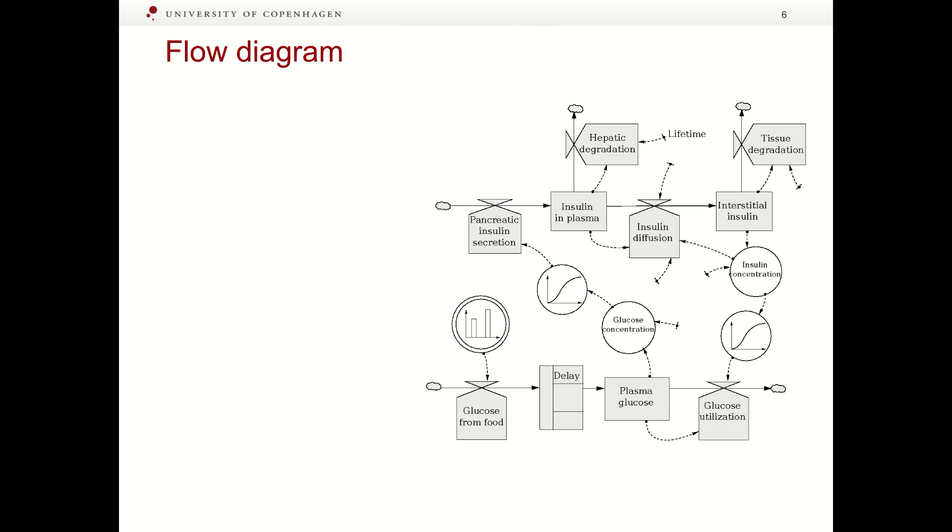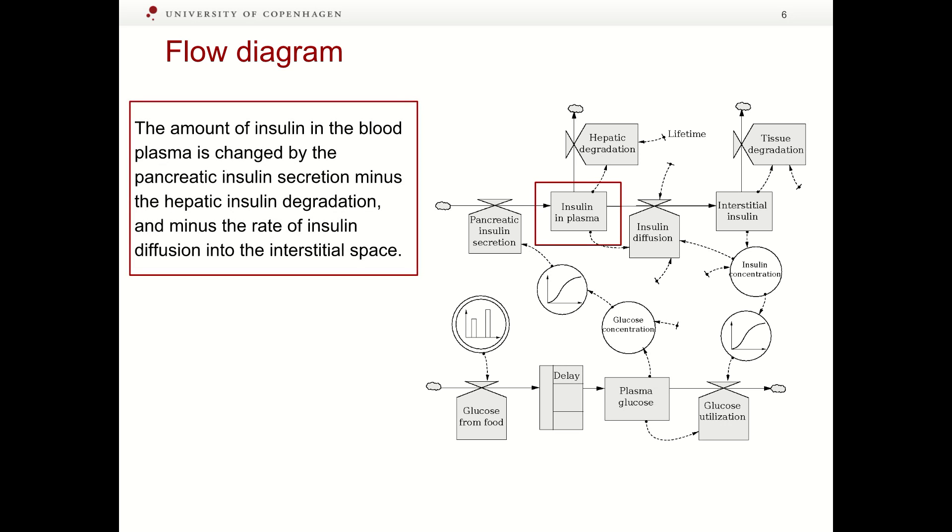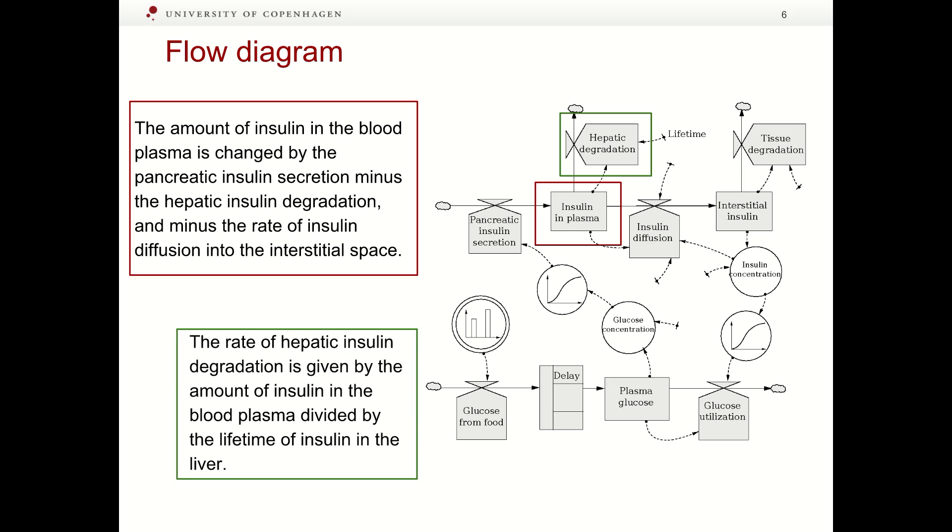The present flow diagram allows us to follow the flow of insulin from pancreatic secretion via the plasma and interstitial spaces to final degradation in the liver or in the muscle and fat tissue. The first state variable describes the amount of insulin in the blood plasma. The amount of insulin in the blood plasma is changed by the pancreatic insulin secretion minus the hepatic insulin degradation and minus the rate of insulin diffusion into the interstitial space. One of the related flow variables describes the rate of hepatic insulin degradation. The rate of hepatic insulin degradation is given by the amount of insulin in the blood plasma divided by the lifetime of insulin in the liver. In a similar way, one can describe other state and flow variables.